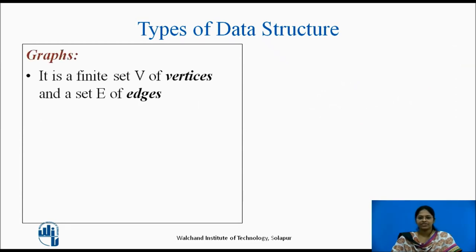The last is the graphs. Graph is a general tree with no parent-child relationship. Graphs represent a relatively less restrictive relationship between the data items. A graph may be defined as a finite set of vertices and a set of edges which is represented by G equals V, E. It can be of two types.